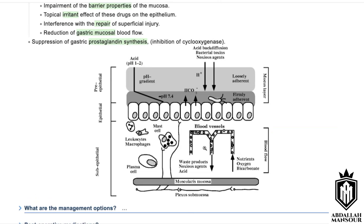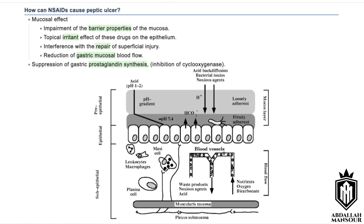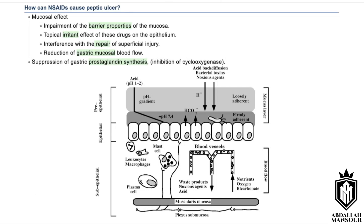There is also abundant blood supply to this area providing nutrients and removing waste. When NSAIDs come into play, they disrupt this mucosal barrier. They are topically irritant to the epithelium, delay healing after injury, and cause vasoconstriction to decrease vascular flow, consequently impairing the ability to heal.